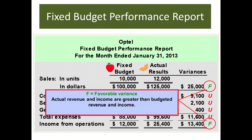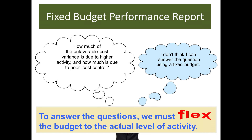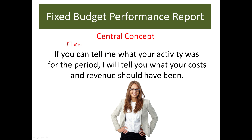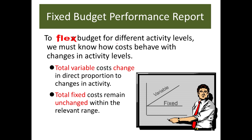I chose to go through the lawn mowing example as opposed to the one they did in here, but that's another one you can go through in the PowerPoints. The whole idea of a flexible budget is: if you can tell me what your activity was for the period, I can tell you what your costs should have been. Then we went through that example with the lawn mowing company. Now let's go ahead and take a look at the chimney example.